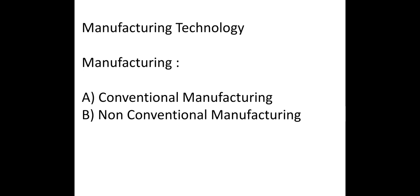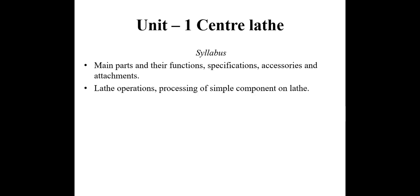Now we will look at conventional machine tools. In unit one, we are going to study the conventional lathe machine, that is the center lathe machine. In this chapter, we will study in detail the main parts and their functions, specifications of the lathe machine, accessories and attachments, lathe operations, and processing of simple components on the lathe machine.